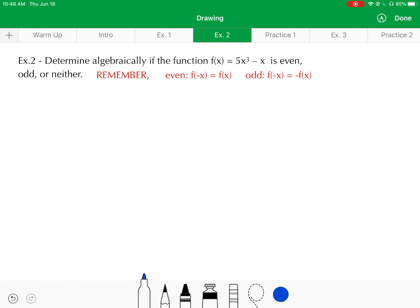Now let's do this algebraically. Here I have the equation f(x) equals 5x cubed minus x. And without graphing it, I want to determine algebraically whether it is even, odd, or neither. And this is where these rules come into play.